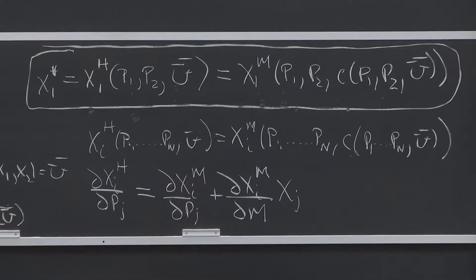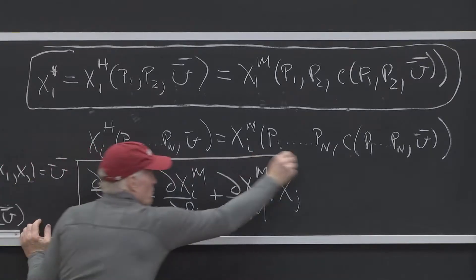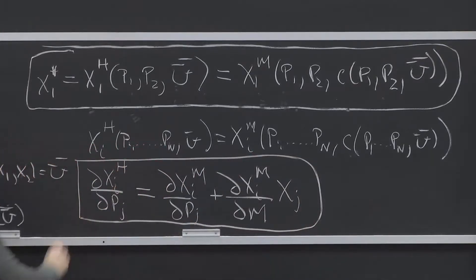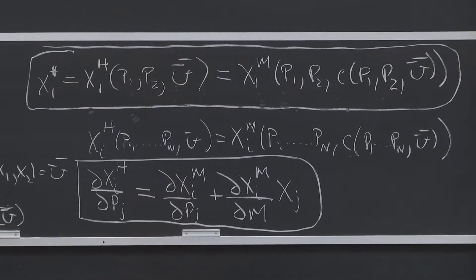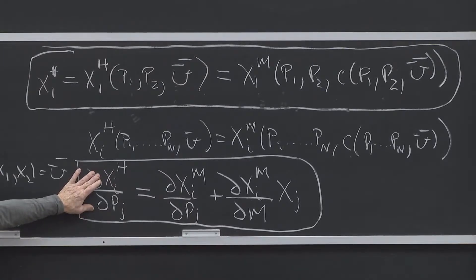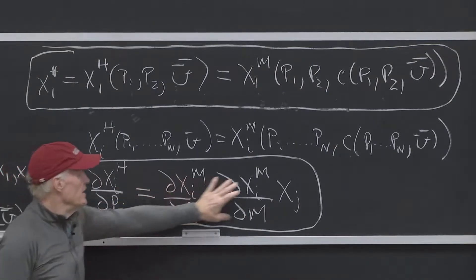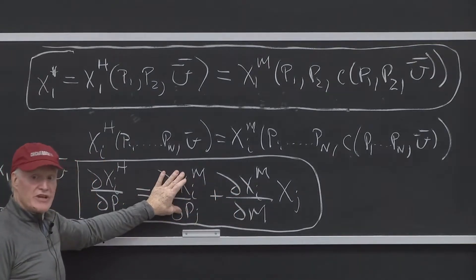This is known as the Slutsky equation. It allows me to go back and forth between the derivatives of the Hicksian system on the one hand and the derivatives of the Marshallian system on the other.